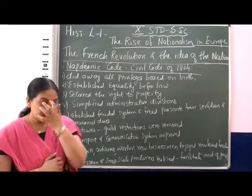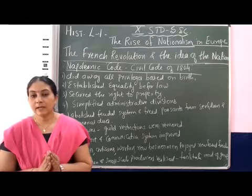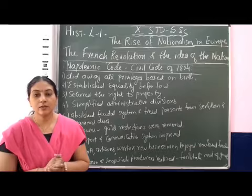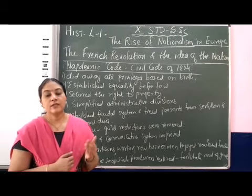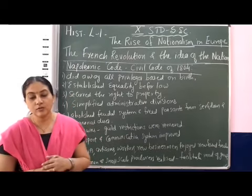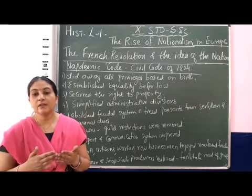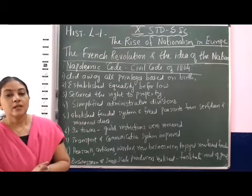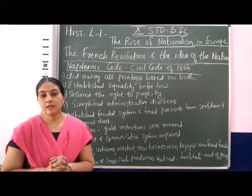The first change was that Napoleon did away with all the privileges based on birth. During the time of Louis XVI, there was a system of three estates, and the first two estates enjoyed all privileges simply because they were born into those families. Napoleon said there would be no privilege given to anybody only because they are born in noble families, and he cancelled all privileges based on birth.